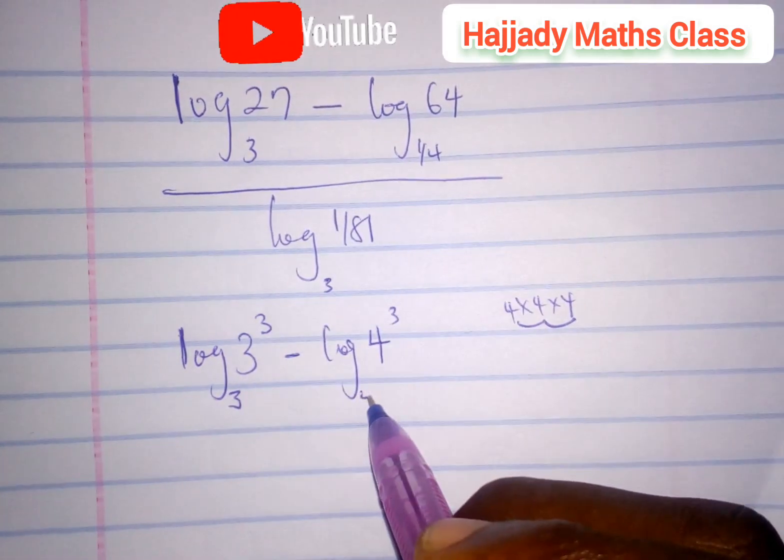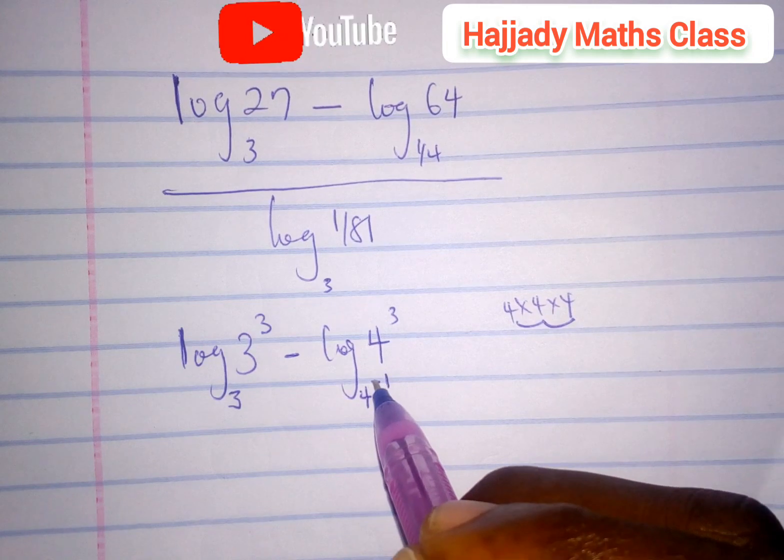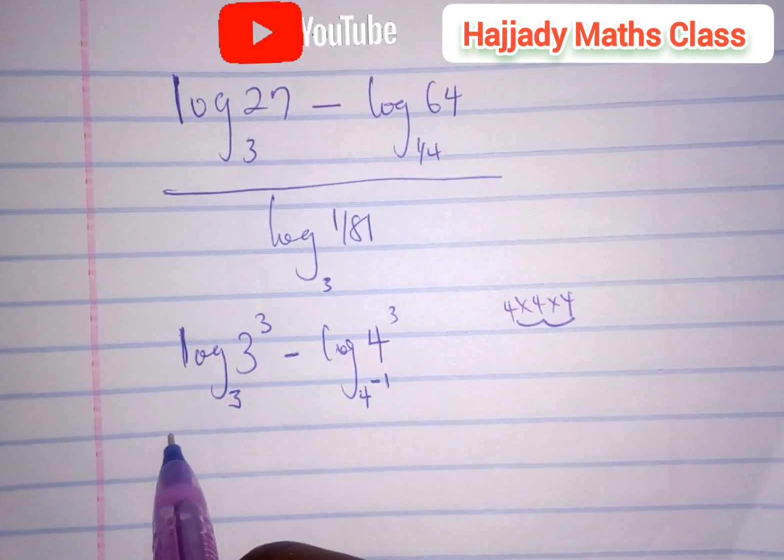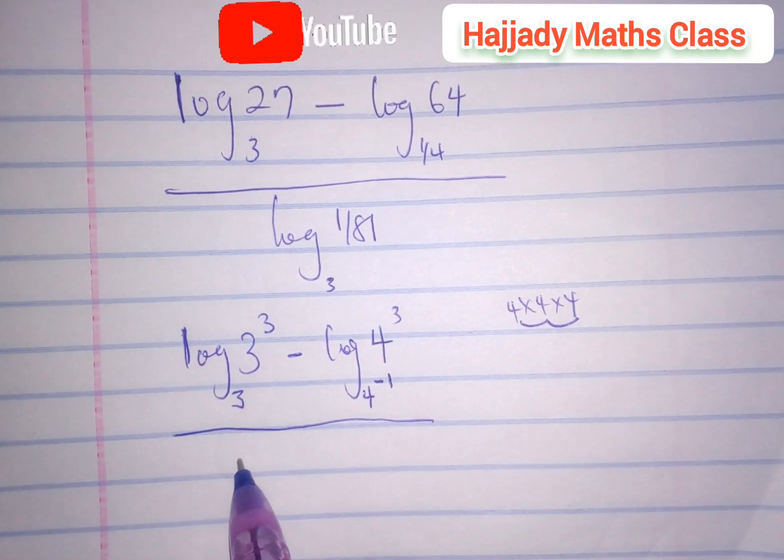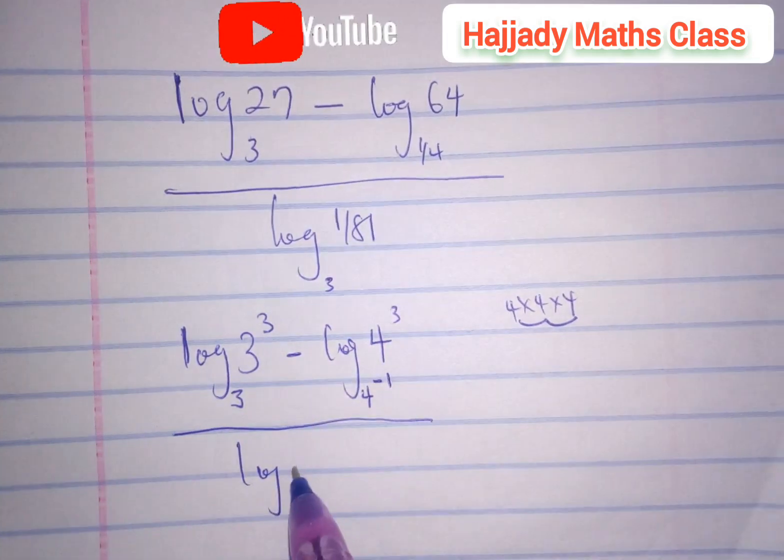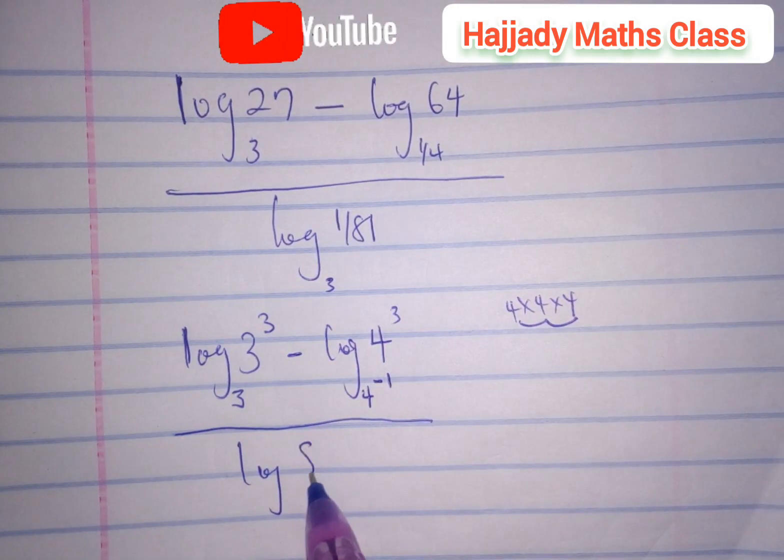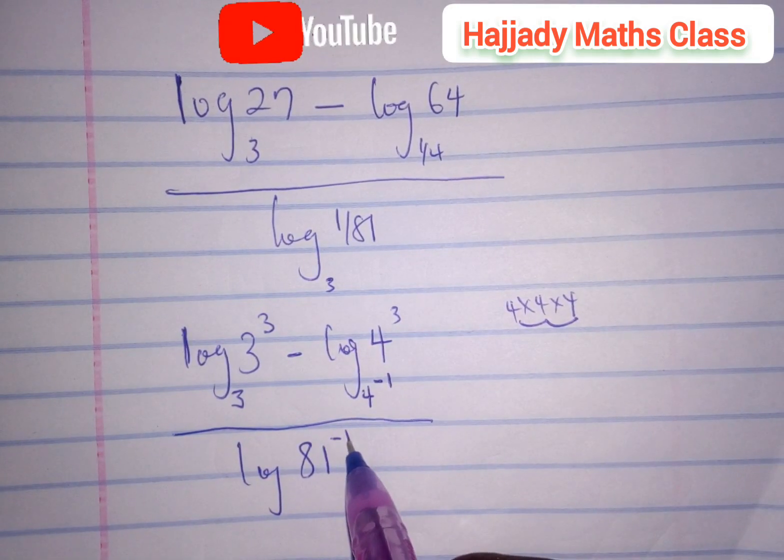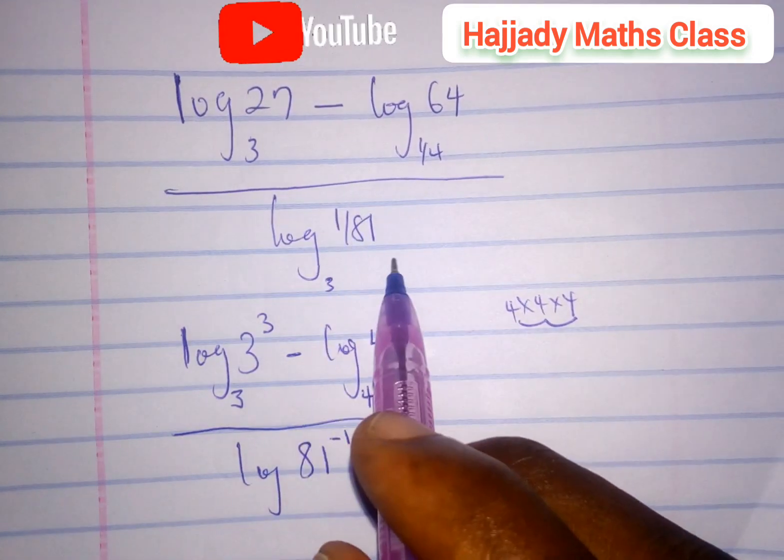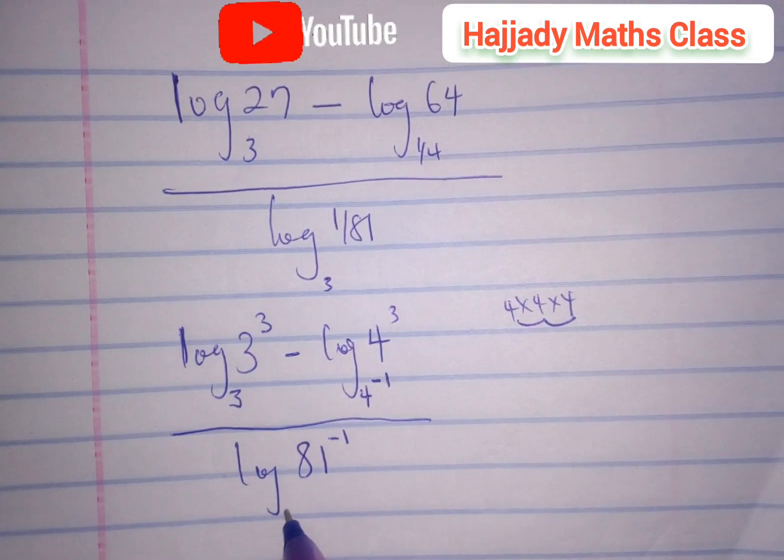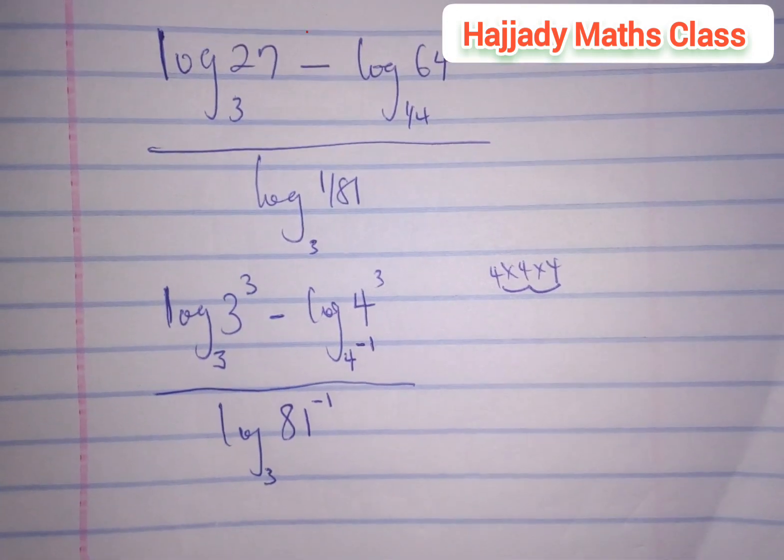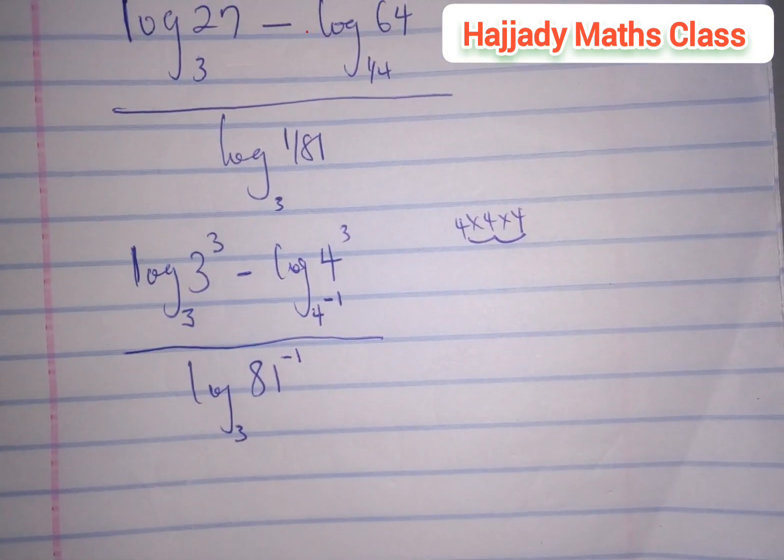Back to the denominator, we have log 81, which can be expressed as 81 raised to power minus 1. That is one over 81. Don't forget the basic rule of indices, base 3. Now to proceed with this, the 3 can easily come to the back.